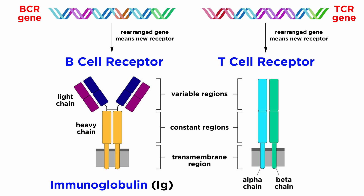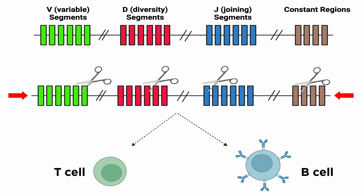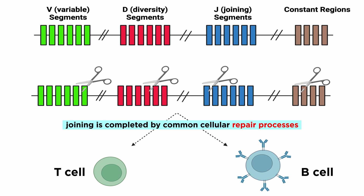DNA rearrangements that generate functional immunoglobulin (IG) and T cell receptor proteins are indispensable for the development, progression, and even the survival of B and T cell precursors. This is initiated by breakage at precisely defined locations in DNA, and the joining is completed by the common cellular repair response related to the repair of breakage caused by factors such as ionizing radiation or other genotoxic agents.